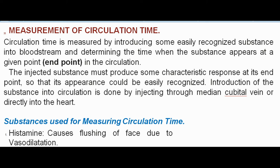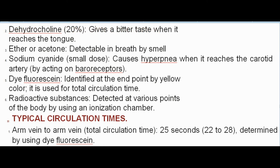Substances used for measuring circulation time: Histamine — causes flushing of face due to vasodilatation. Dehydrocholine 20% — gives a bitter taste when it reaches the tongue. Ether or acetone — detectable in breath by smell. Sodium cyanide — small dose causes hyperpnea when it reaches the carotid artery by acting on baroreceptors. Difluorescein — identified at endpoint by yellow color, used for total circulation time. Radioactive substances — detected at various points of the body using an ionization chamber.